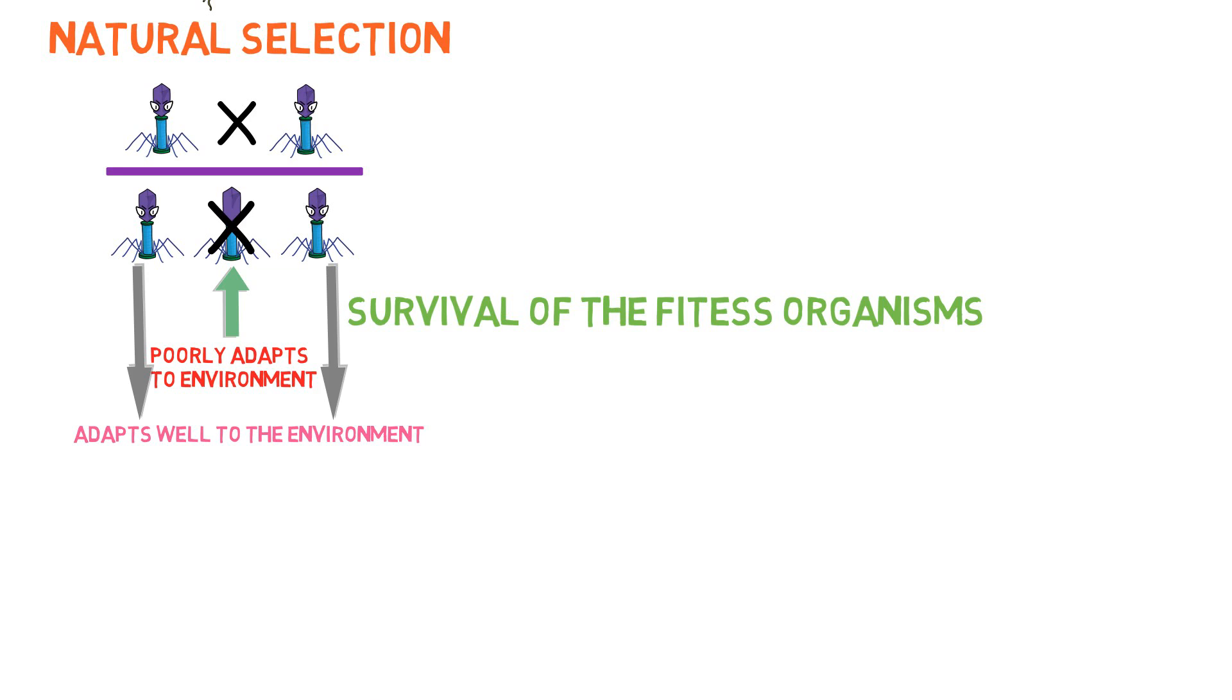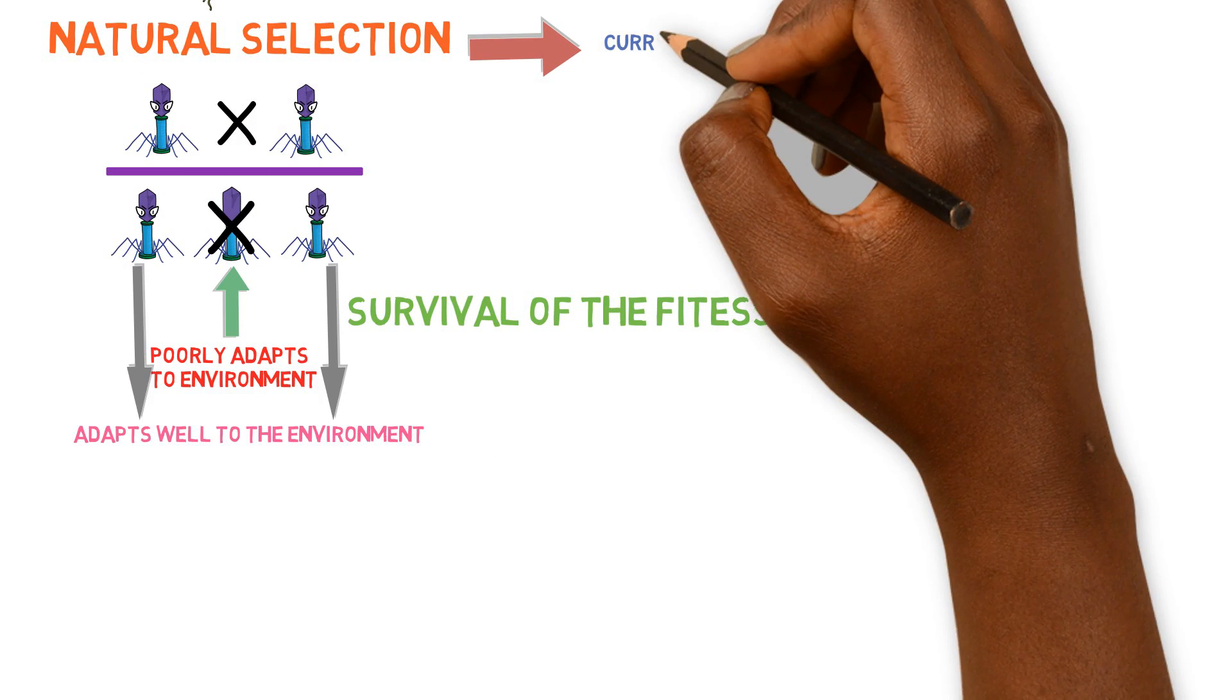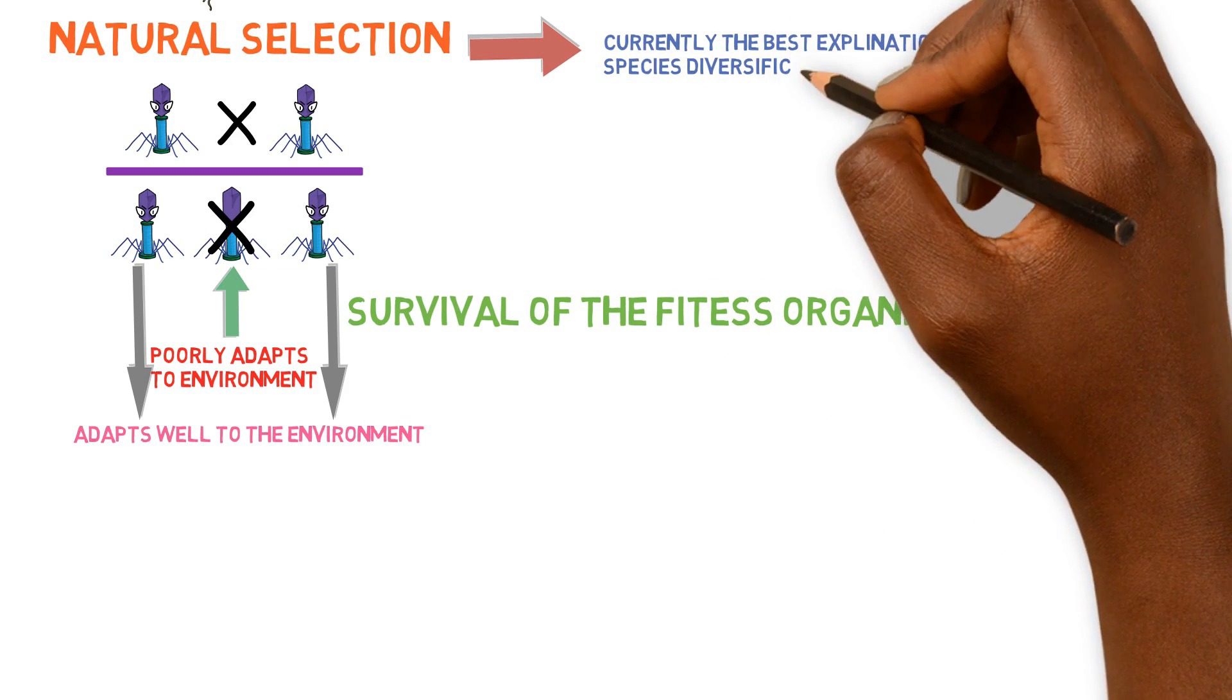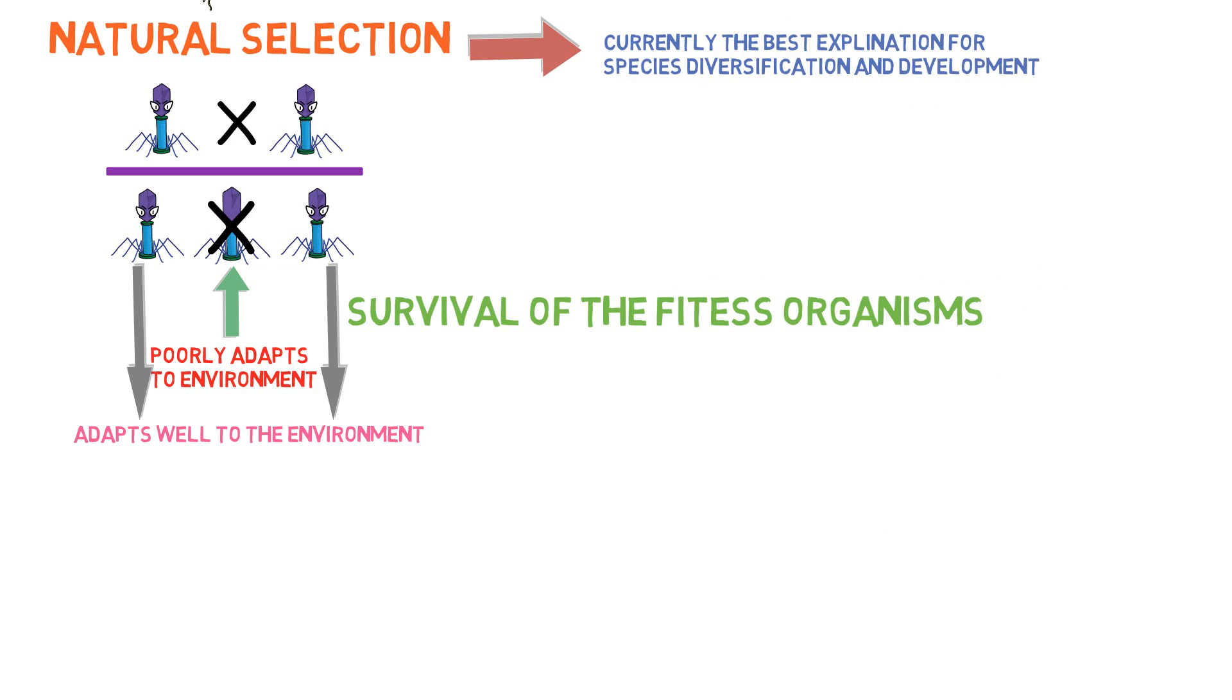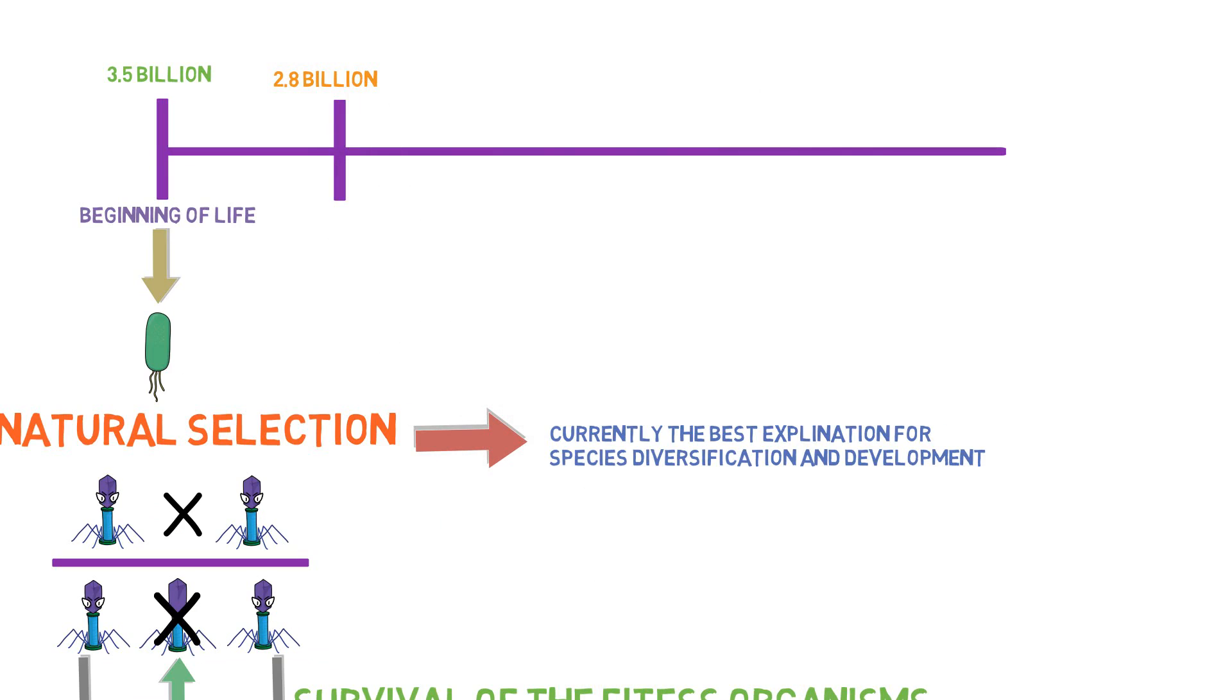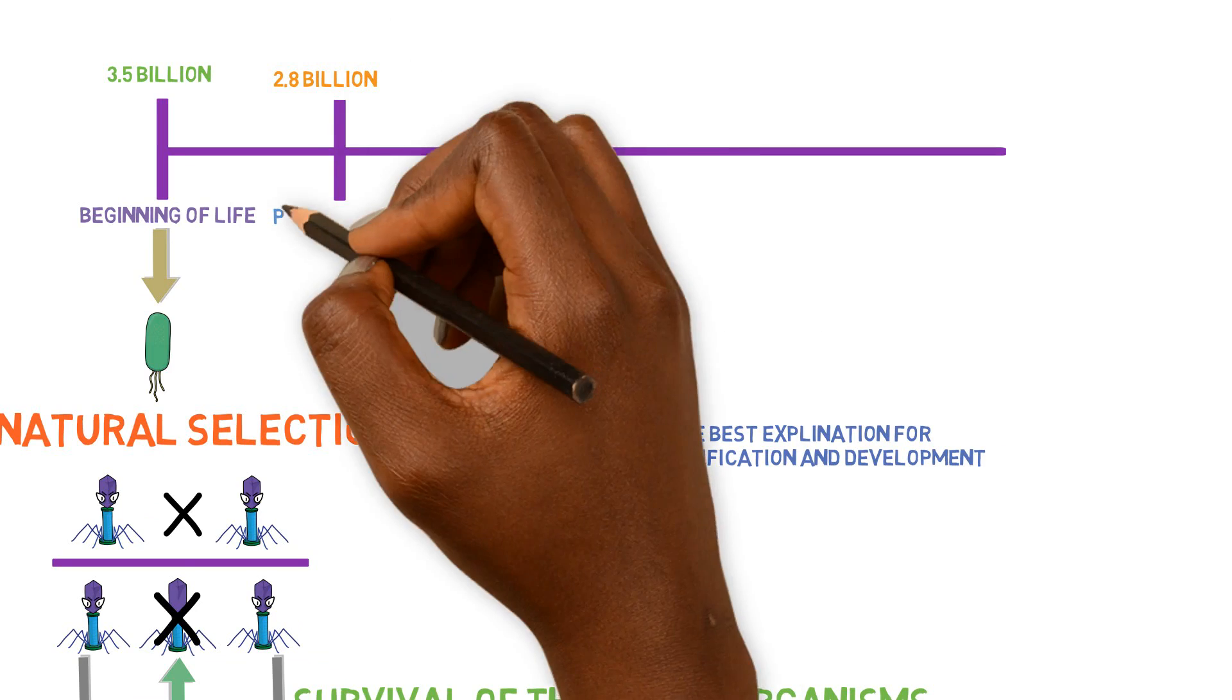This is the consensus amongst biologists that natural selection is most consistent with observations of organisms, experiments, and theoretical considerations. It's the best explanation for how organisms came to be in present day. Around 2.8 billion years ago, there was a major evolution responsible for photosynthesis.